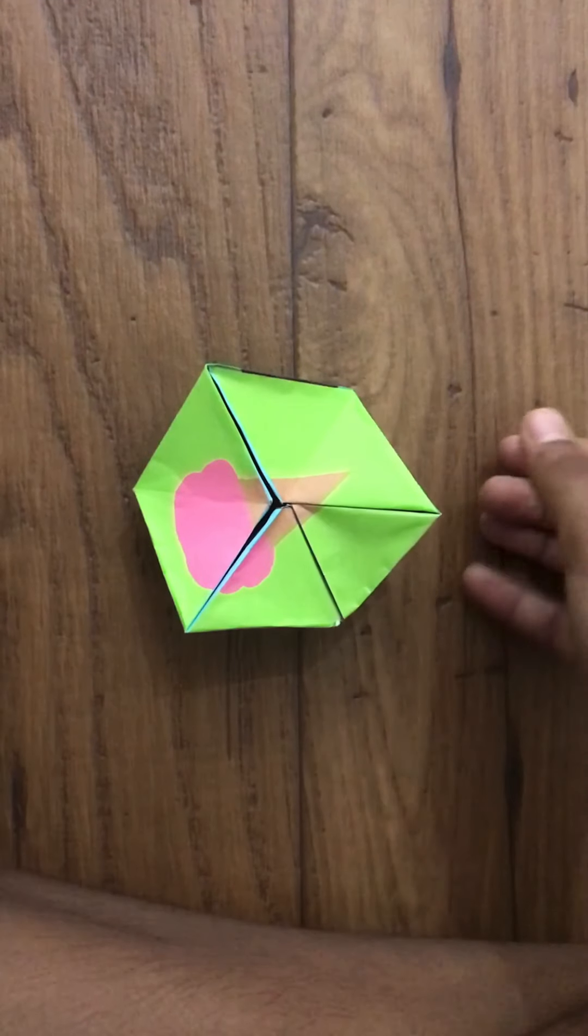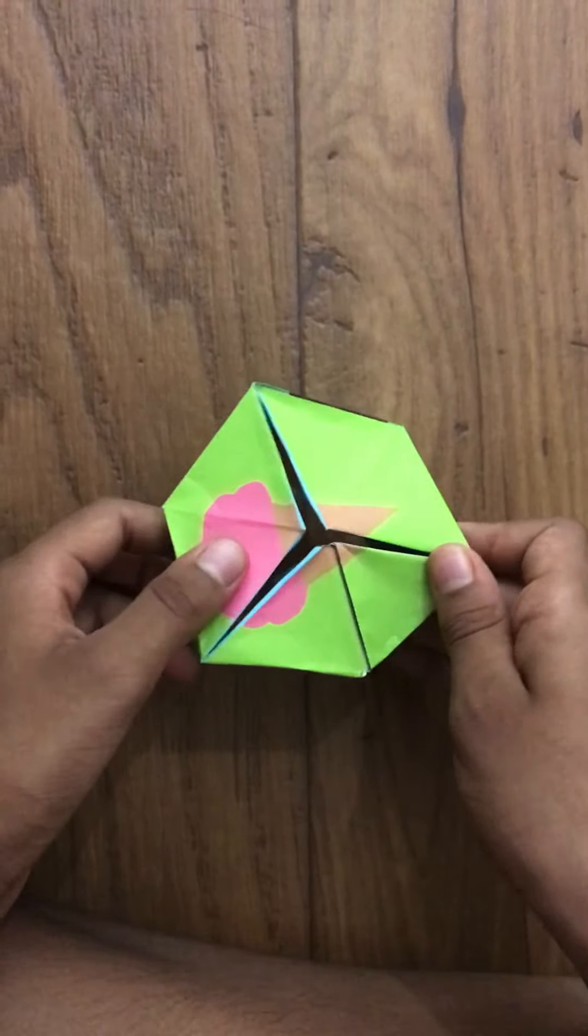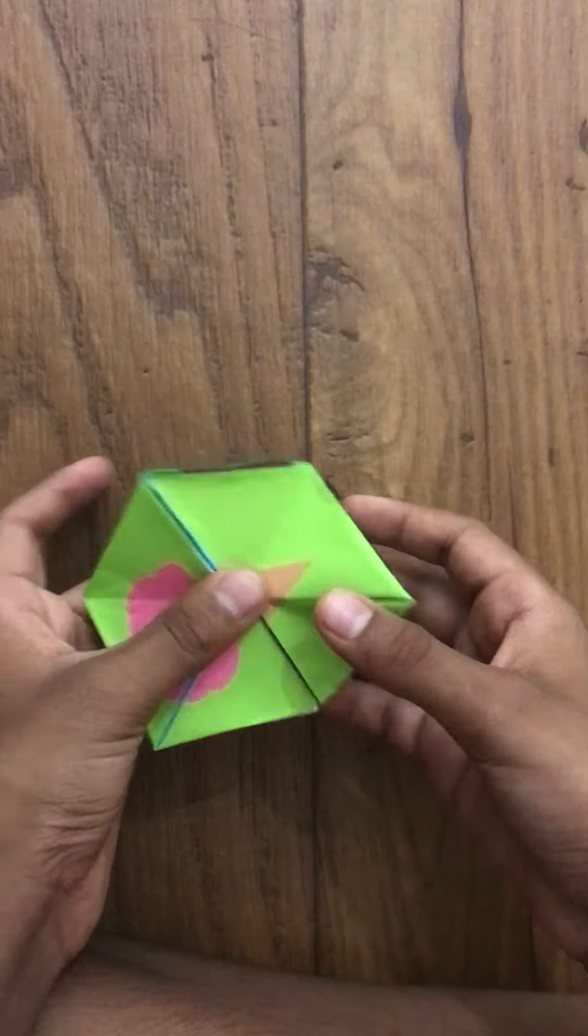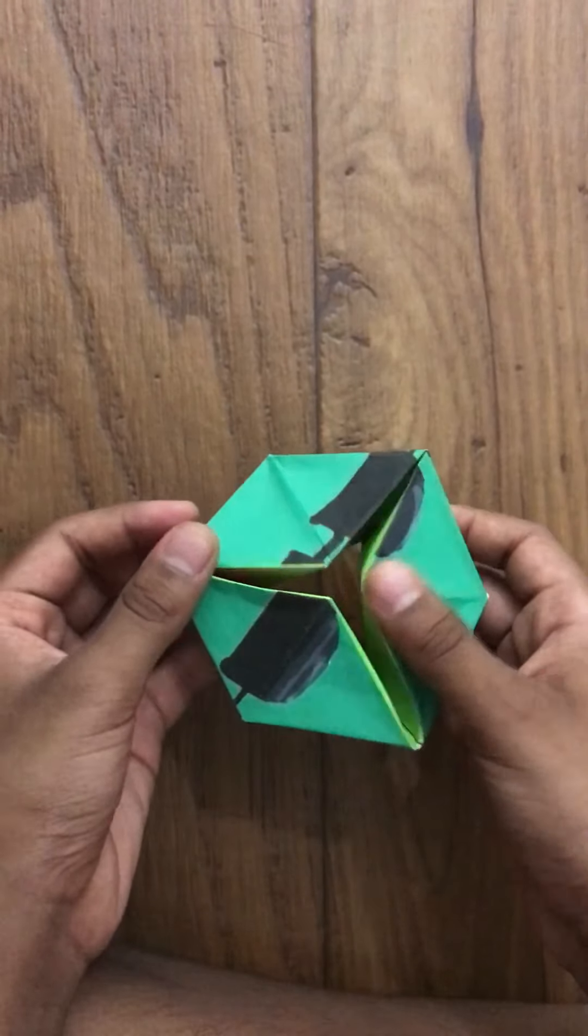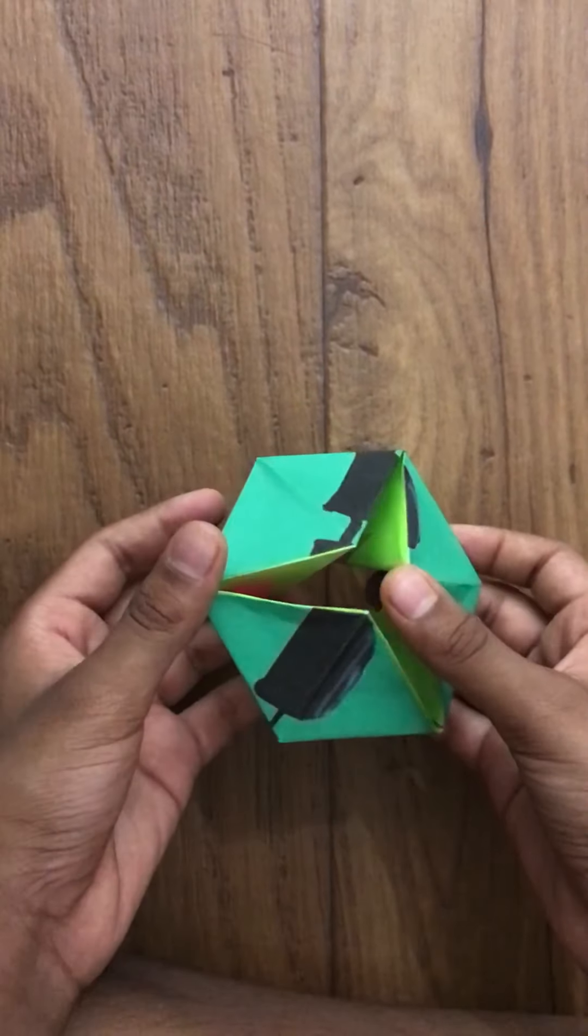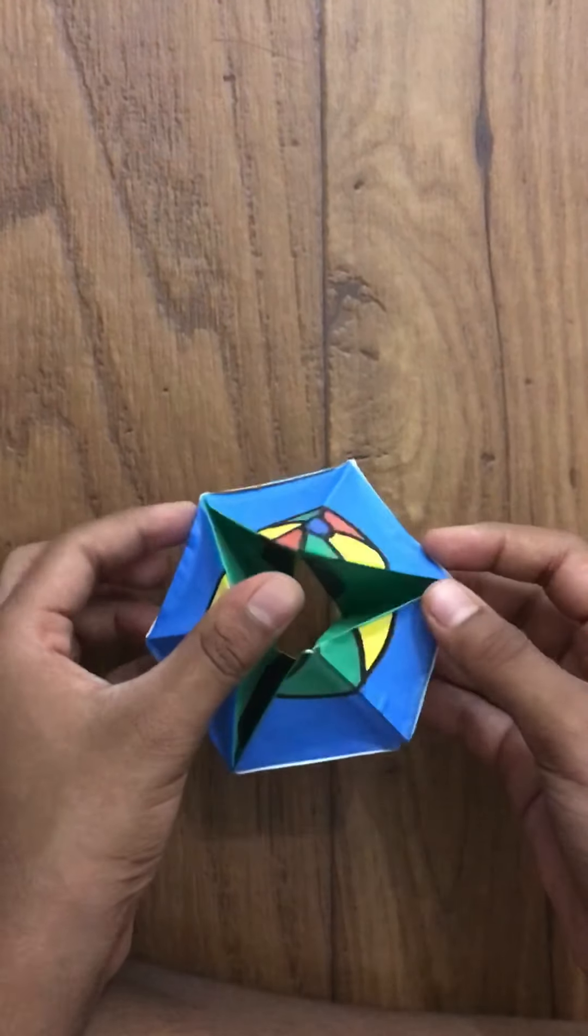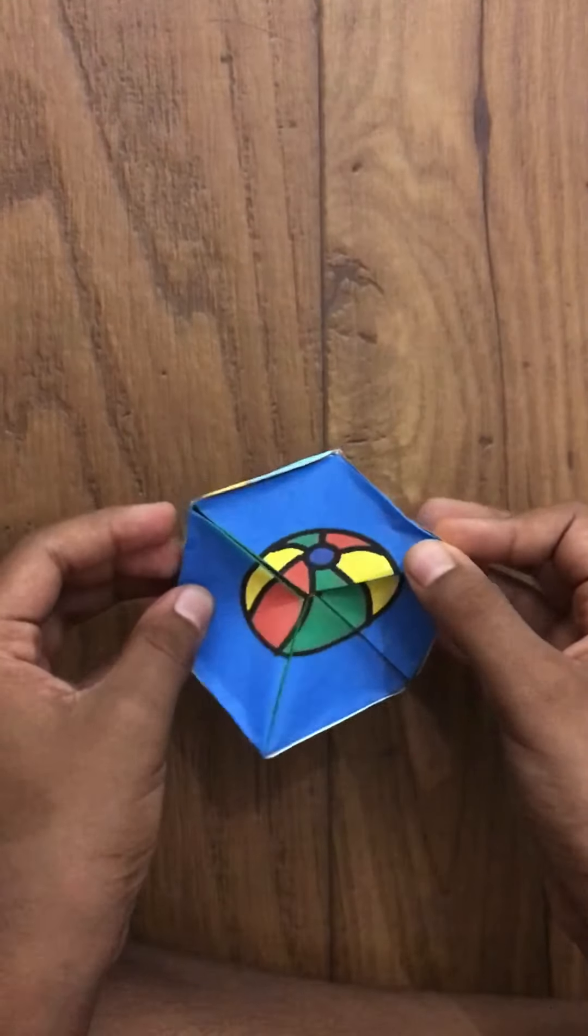So guys, five minutes over. It takes a little bit more than five minutes, maybe like ten minutes. And this flex tangle is ready. Now you can turn it and a new picture will come. There are four pictures.